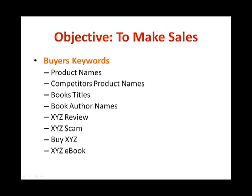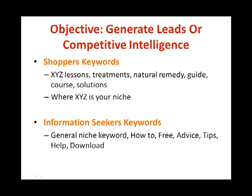If your objective is to make sales, bid for buyer's keywords — examples include product names, competitor product names, book titles, book author names, 'XYZ review,' 'XYZ scam,' 'buy product,' and 'XYZ ebook.' If your objective is to generate leads or gain competitive intelligence, bid on shopper and information seeker keywords. Shopper keywords include terms like 'XYZ lessons,' 'treatments,' 'natural remedies,' 'guides,' 'courses,' and 'solutions.' Information seeker keywords are broad terms with intent to find general or free information — examples include general niche keywords, 'how to,' 'free,' 'advice,' 'tips,' 'help,' and 'download.'